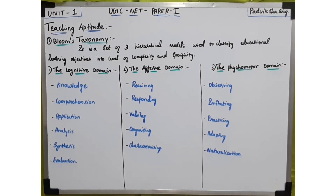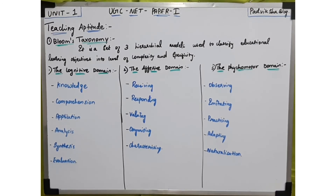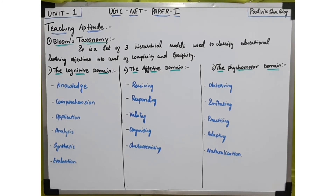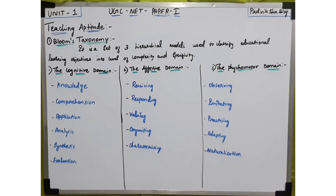The first level is observing — it involves active mental attending of a physical event. You need to be both physically present and mentally present. Physical presence without mental attention is not enough. Observation is totally important, so the first level is observing.